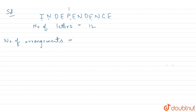Before that we have to check how many letters are repeating. So we have N which is repeating 3 times. Then we have D which is repeating 2 times. Then we have E which is repeating 4 times.